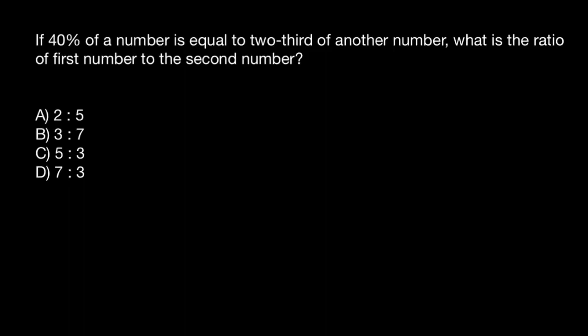Hello, and welcome to Nikolai's Genetics Lessons. And today we are going to talk about ratios. And here's a problem. If 40% of a number is equal to two-thirds of another number, what is the ratio of the first number to the second number?